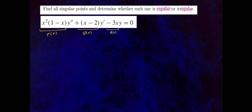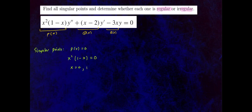To find singular points, set p of x equal to 0. For this problem, p of x is x squared times (1 minus x), set equal to 0. This gives x equals 0 (when x squared equals 0) and x equals 1 (when 1 minus x equals 0). So we have two singular points for this differential equation.